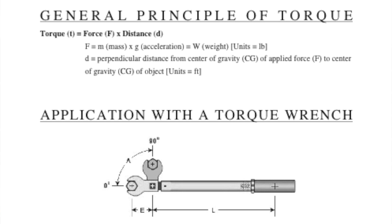Starting off, let's talk about the general principle of torque by definition. I'll be working in imperial units — pounds and feet. By definition, torque is equal to force (F) times distance (D). Force is equal to mass times acceleration, which equals weight, so force equals weight, with units of pounds — also referred to as pounds-force. Distance (D) is the perpendicular distance from the center of gravity of the applied force to the center of gravity of the object, expressed in units of feet.